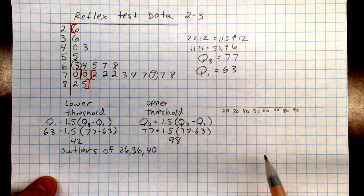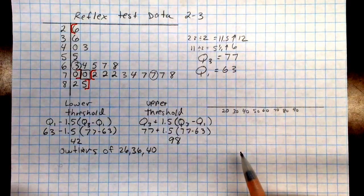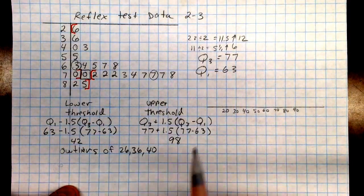So let's graph each of our five-number summary. Remember the five-number summary is made up of the highest number, the lowest number, the two quartiles, and the median.